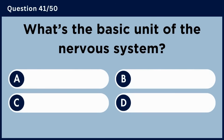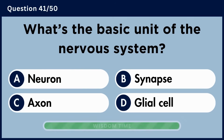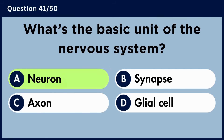What is the basic unit of the nervous system? Answer A: Neuron.